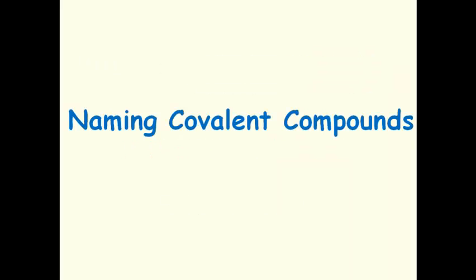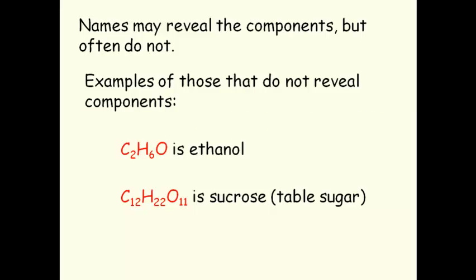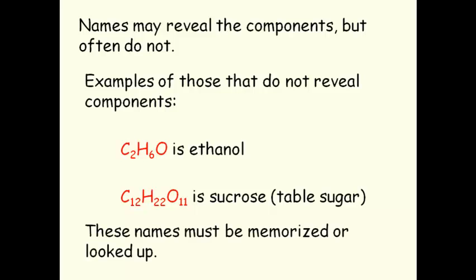Naming Covalent Compounds. Names may reveal the components, but often they do not. For example, C2H6O is commonly known as ethanol and C12H22O11 is sucrose or table sugar. These names must be memorized or looked up.